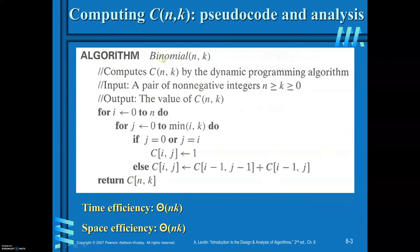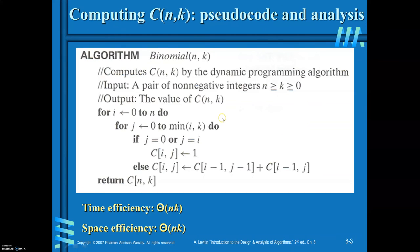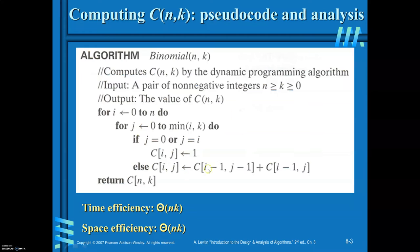To summarize the pseudocode: the function binomial(N, K) takes N and K, both greater than or equal to 0, with N greater than or equal to K. Vary i from 0 to N and j from 0 to minimum of (i, K). If j equals 0 or j equals i, set C(i,j) = 1; otherwise, C(i,j) = C(i-1,j) + C(i-1,j-1). After completing all iterations, return C(N,K).